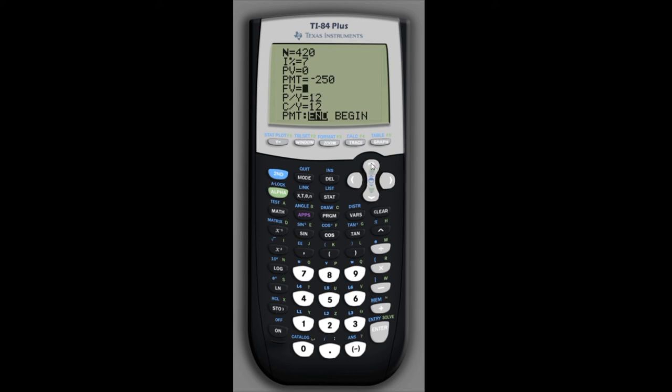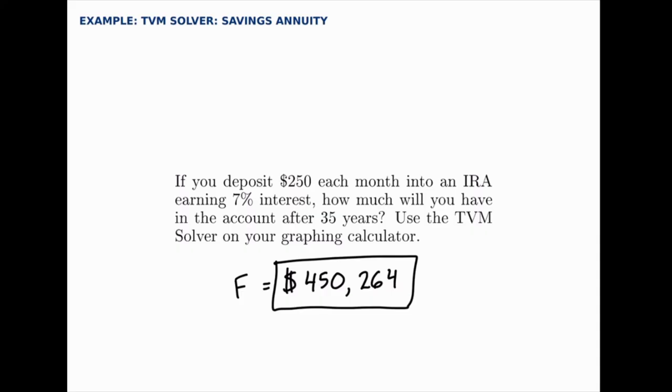So now I'm ready to solve for the future value. That's the green text option on the enter key. So I need to hit alpha to select the green options and then the enter key to solve. And that works out to just over $450,000 over a period of 35 years. And here I rounded that to the nearest dollar, just over $450,000 if you save $250 each month, earning 7% interest for 35 years.